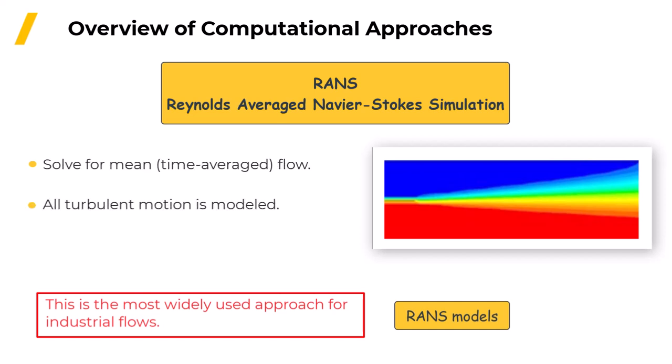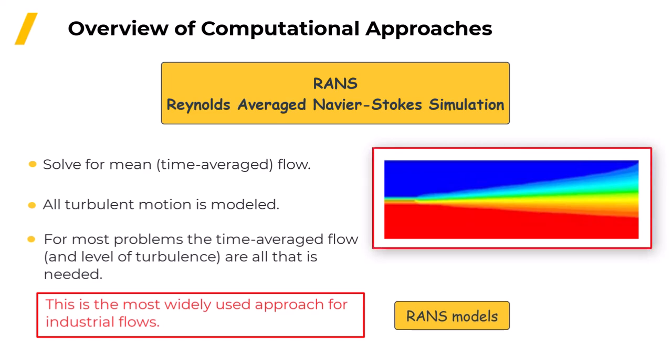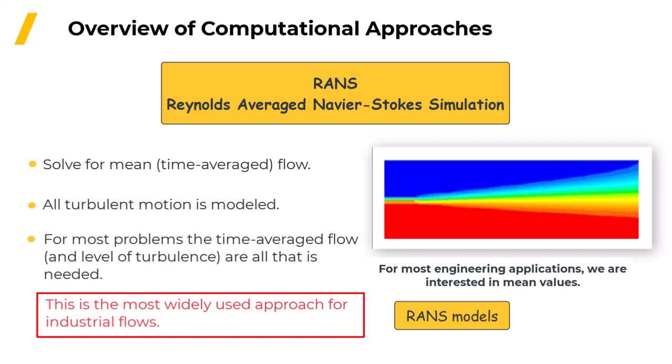Instead, the mean flow field is calculated and the role of the model is to predict the effect of turbulence on the mean flow field. The diagram shows an illustration of the mean flow field predicted by a RANS simulation. There is not as much detail as LES, but for most engineering applications, the mean values are all we are really interested in anyway. Therefore, the rest of the video will focus on RANS models.